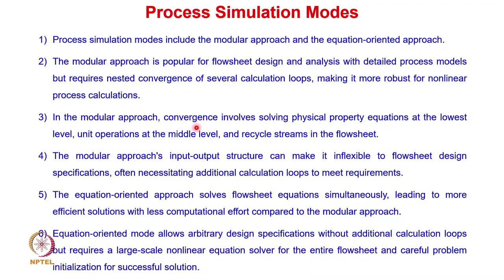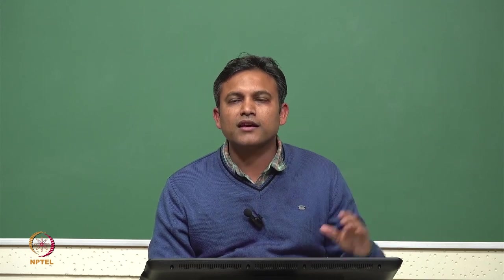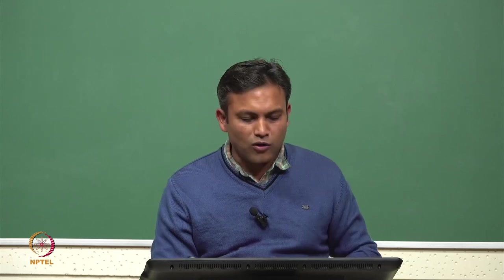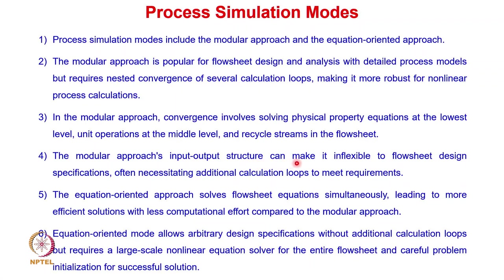In the modular approach, convergence involves solving physical property equations at the lowest level, unit operations at the middle level, and recycle streams in the flow sheet at the highest level. We calculate properties at the lowest level, solve individual units at the intermediate level, and combine everything at the highest level. We then check whether the assumed inputs for different units match the predicted values.